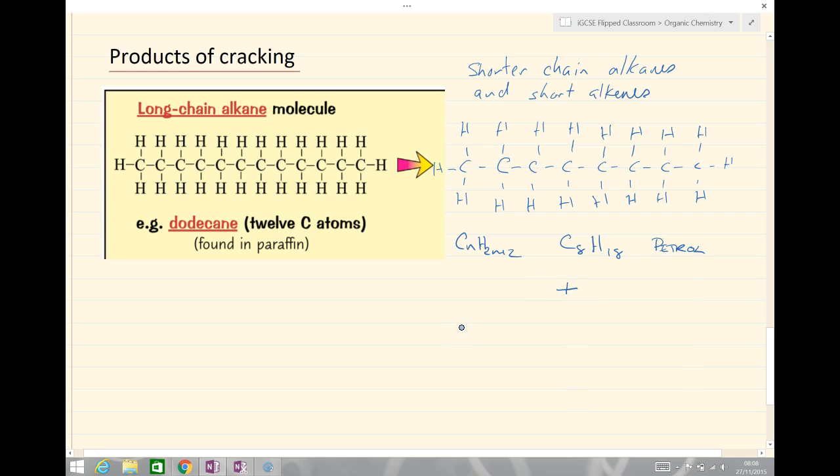And the other 2 products we get here are C2 carbon chains with double bonding. So these are alkenes. And if they've got 2 carbons in the chain and a double bond, we name these both as ethene.